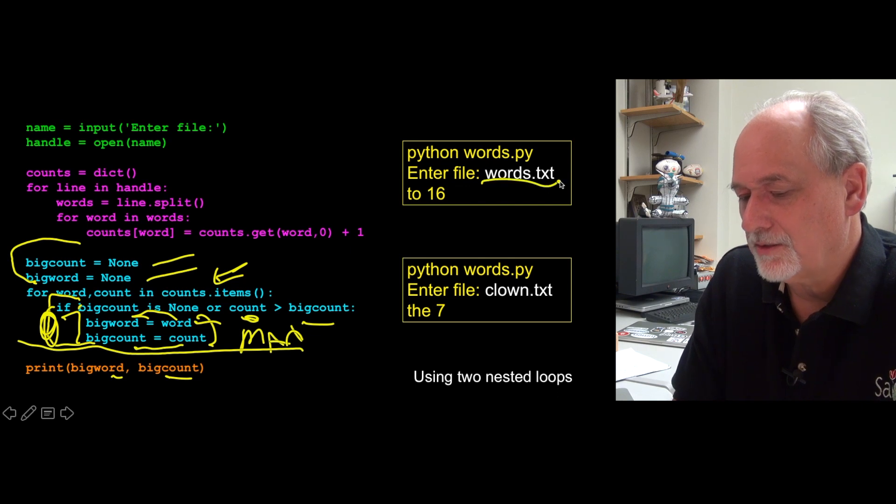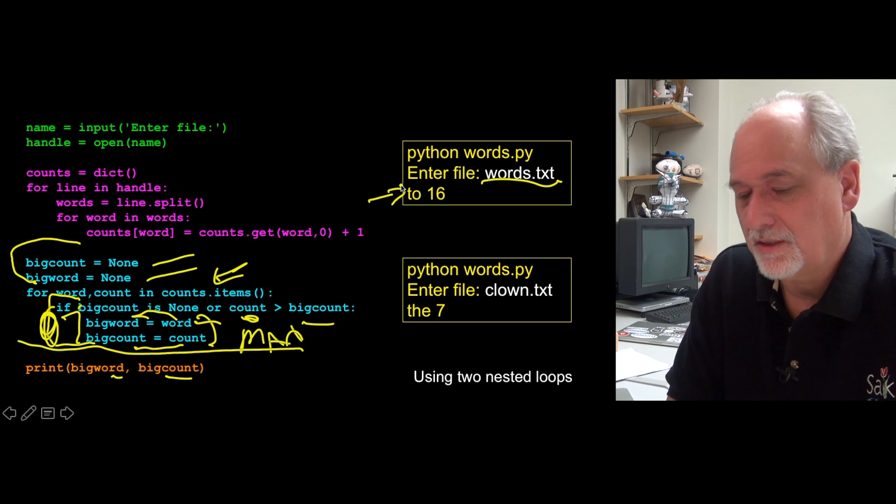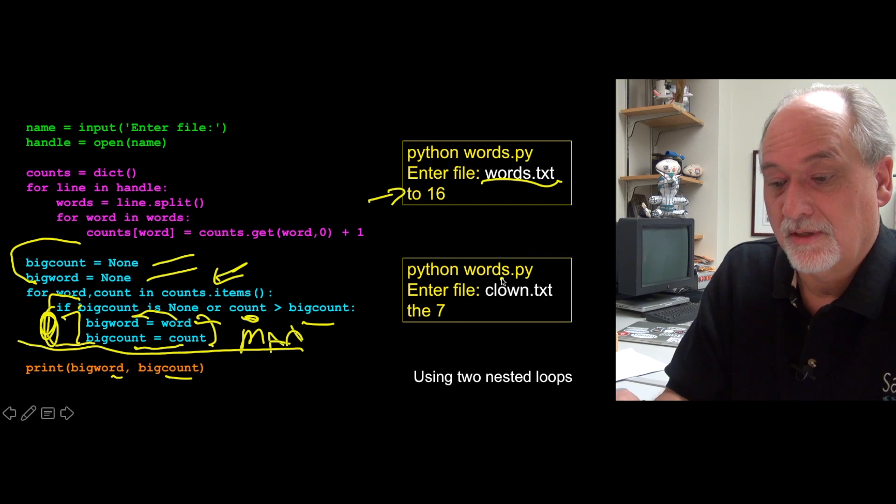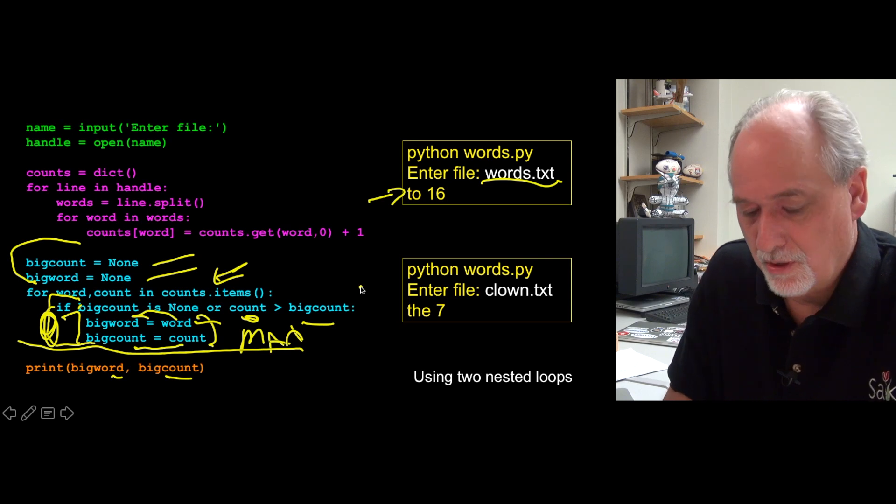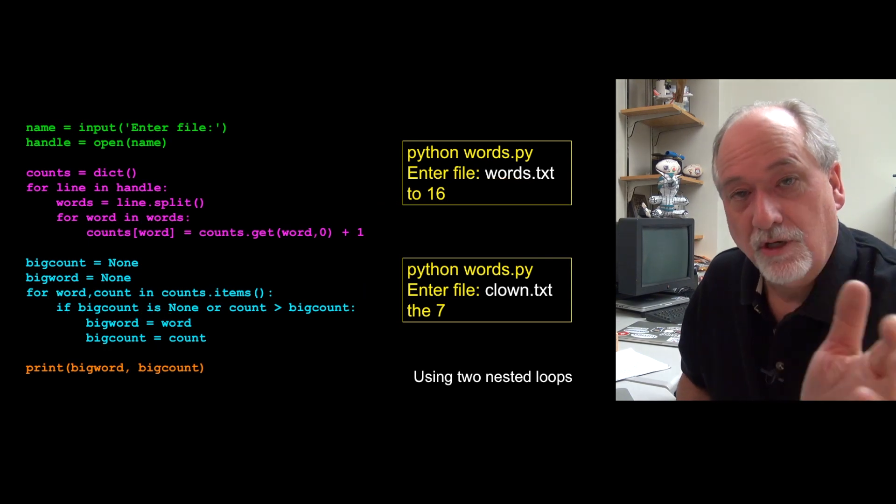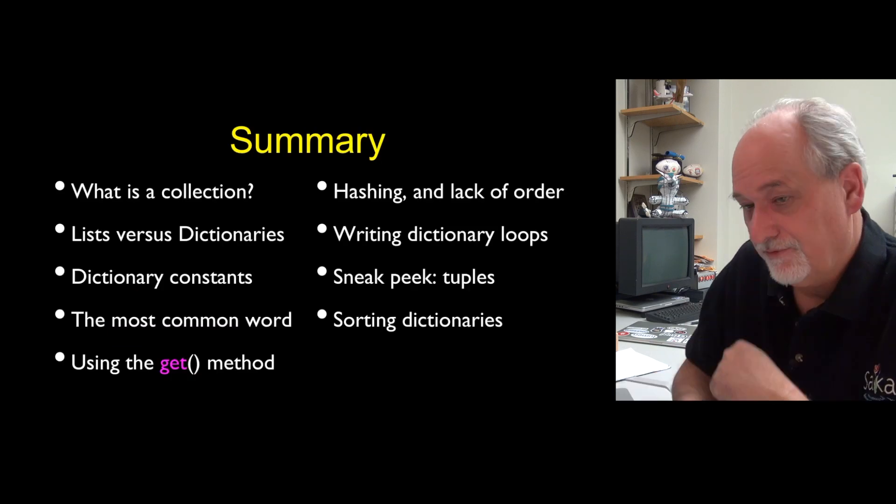And so if we run a file, we say, oh, in that file, two is the most common word. And it's 16 times. If we run the clown file, well, the is the most common word in seven. And so this now is, and this could have a very large file and give you the most common word. And so that is sort of a really good application of dictionaries.